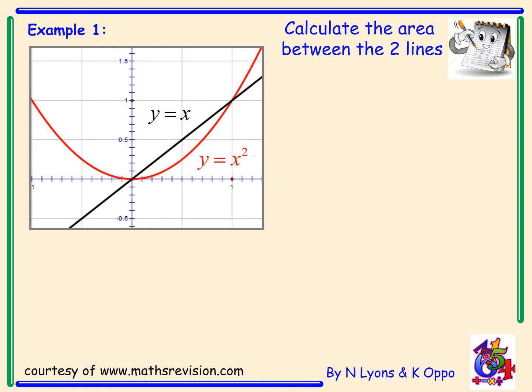So let's try an example. Example one: calculate the area between the two lines. So I've got the line y equals x on top, straight black line, and I've got y equals x squared as the red line underneath. Here are the limits. So I've got from x is 0 to x is 1.